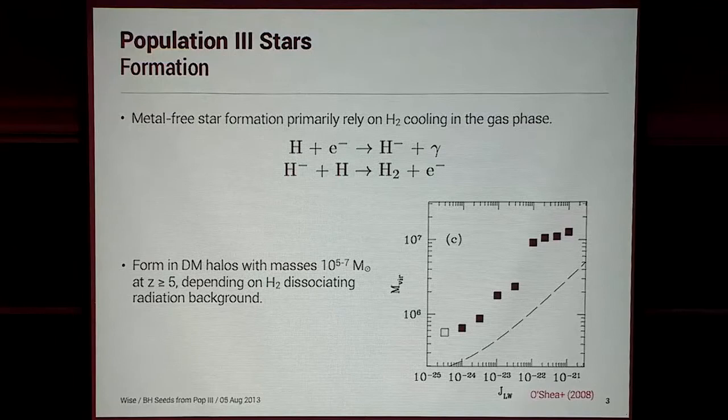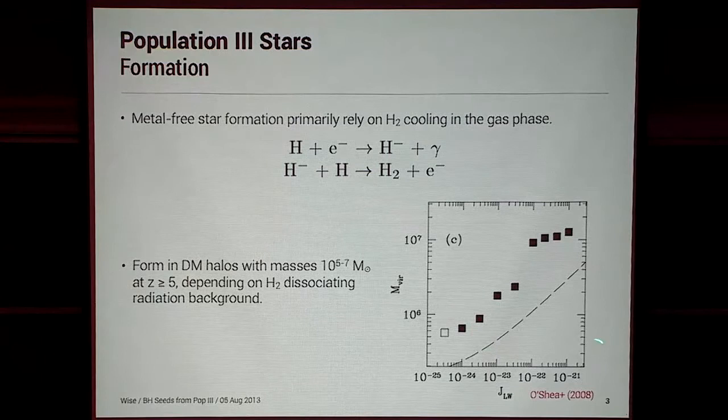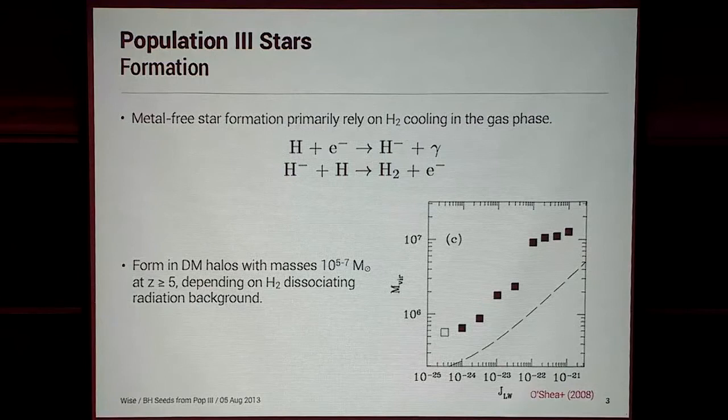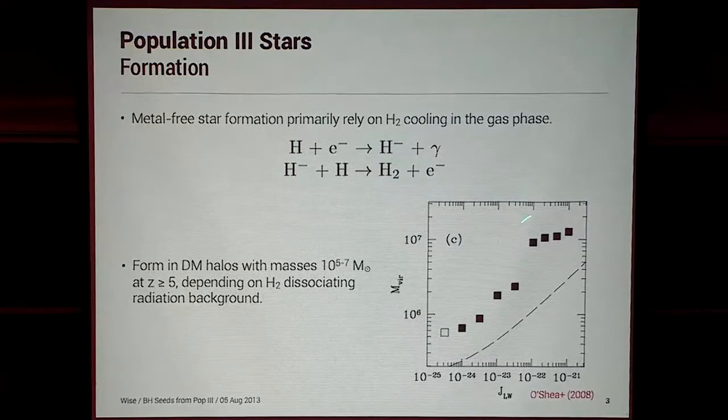Brian O'Shea and Michael Norman looked at what halo mass you actually form one of these Pop III stars given a radiation background. You can see that it varies: if you have almost no ultraviolet background, they usually form in something like 500,000 solar masses. But if you have a more typical ultraviolet background, they typically form in halos around 10^7 solar masses. So it really depends on your local Lyman-Werner radiation intensity.